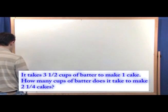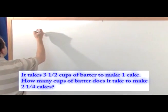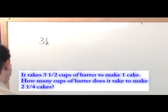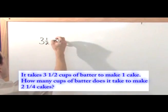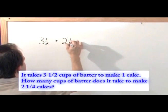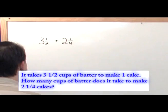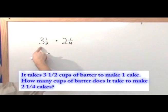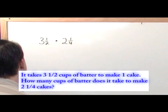So let's do that. We know that it takes three and a half cups of batter to make one cake. But we don't want to make one cake, we're going to multiply by two and a quarter because we're actually trying to make two and a quarter cakes. So we're multiplying three and a half times two and a quarter. How do we do that?